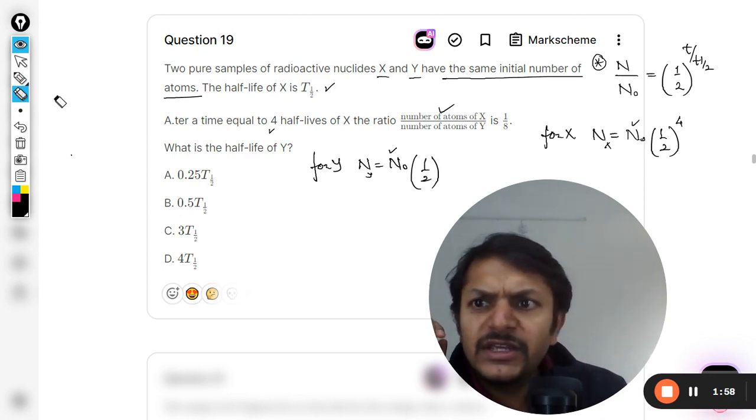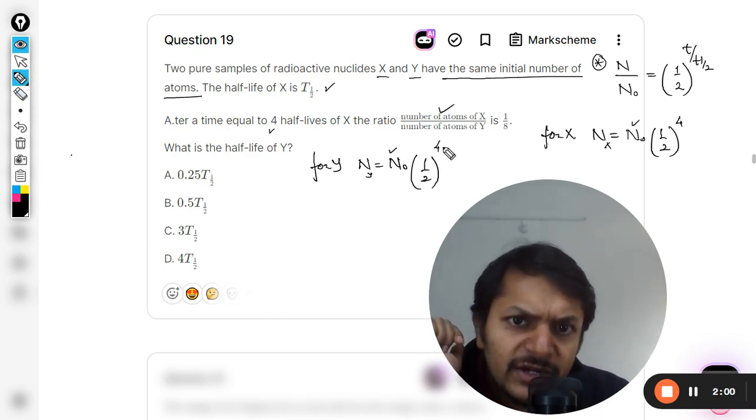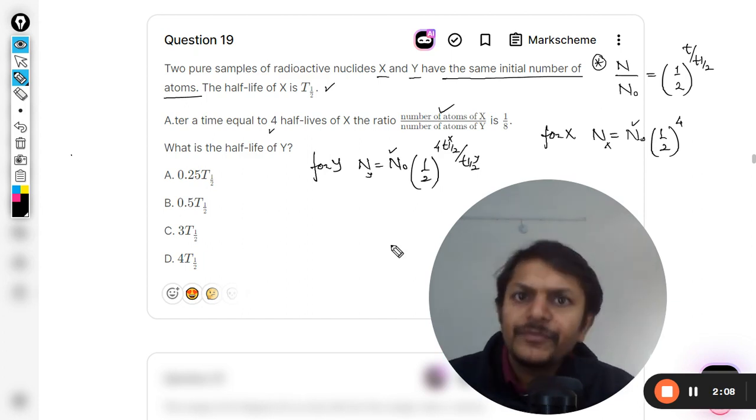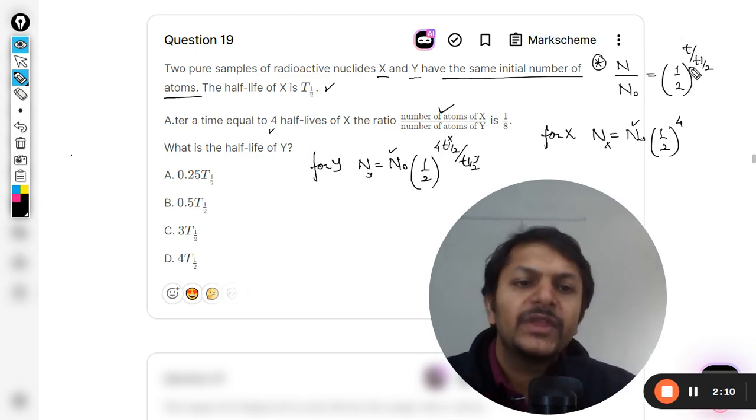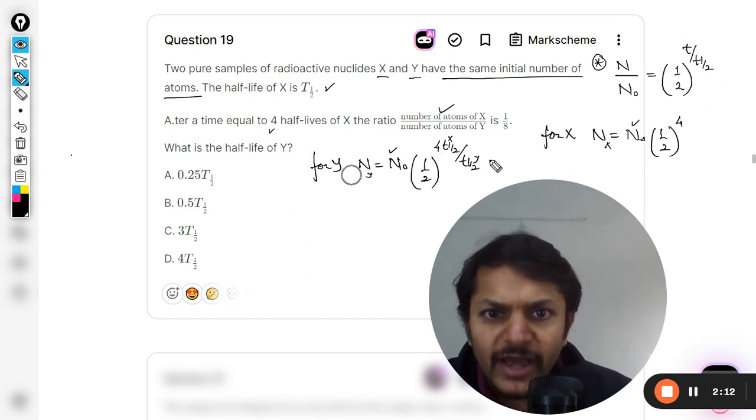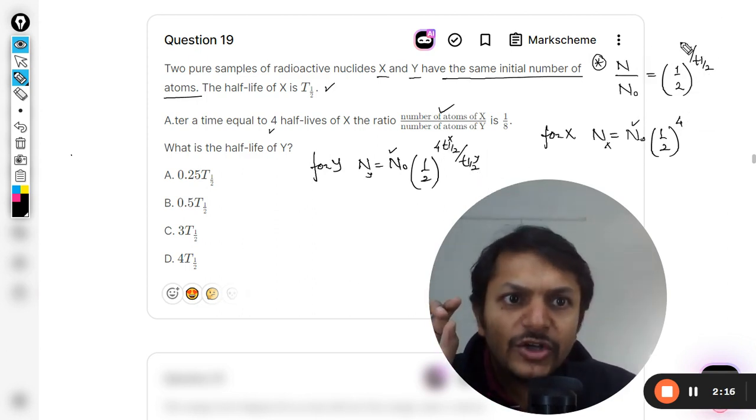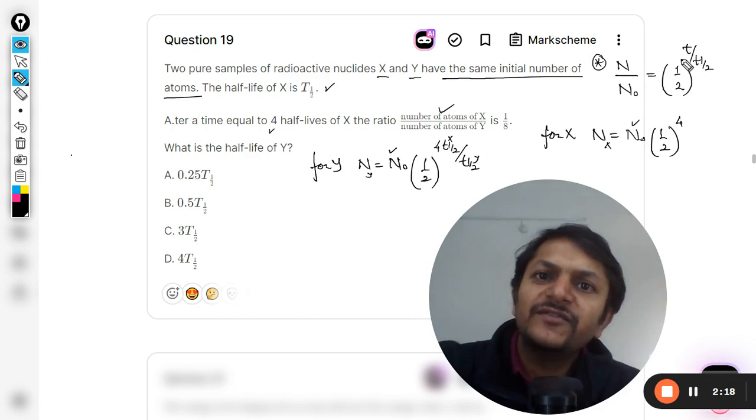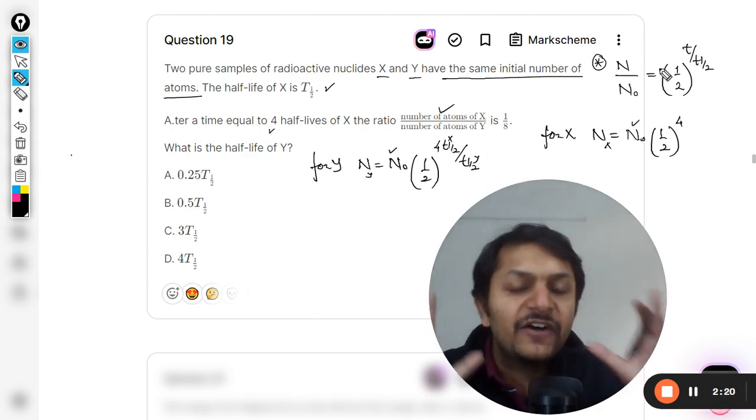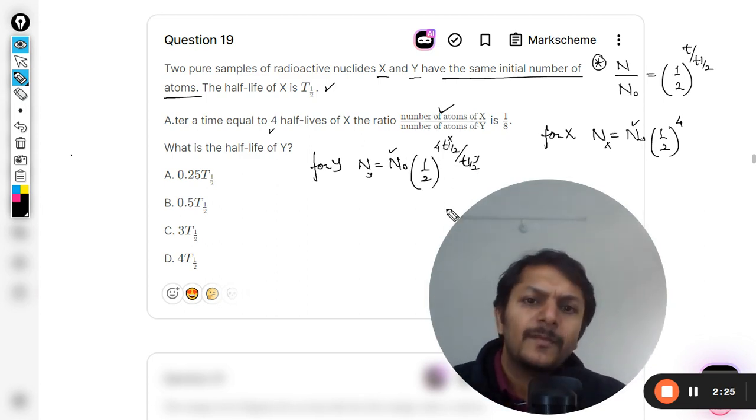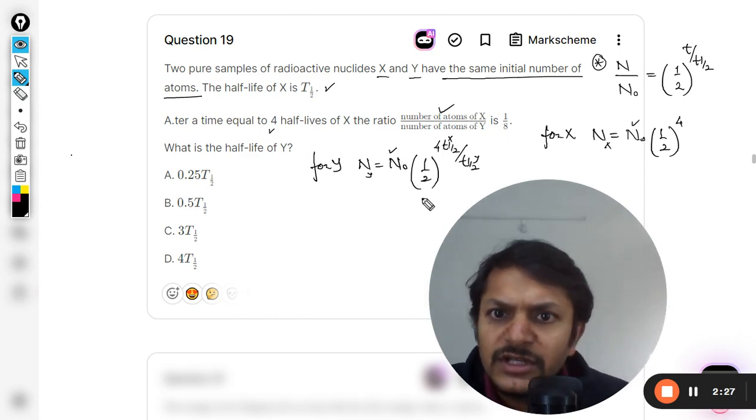Because the t is given in the terms of half-life of X, and this t-half belongs to the half-life of Y, so they are not the same. So I would be plugging this value here, so it can be written as 4 times t-half of X divided by t-half of Y. Clear? I'm using this formula. So because this is for Y, so this t-half will be t-half for Y. But the total time that has been spent, it is given only in the terms of half-life of X, so I have just substituted it somehow like this. Now we are going to see this.